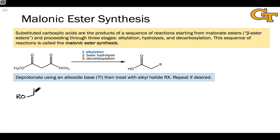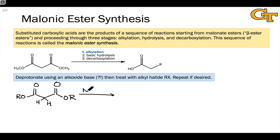The first step of the malonic ester synthesis is deprotonation of the malonate ester. Just as we saw for the acetoacetic ester, the malonate ester has a very acidic alpha carbon sitting between two carbonyl groups, so we don't need to use a strong base — we can use a relatively weak sodium alkoxide. It's important that the R group of the alkoxide match the alkoxy group in both esters of the malonate. Generally these R groups will match, and will be something simple like methyl or ethyl since they get hydrolyzed off at a later stage anyway.